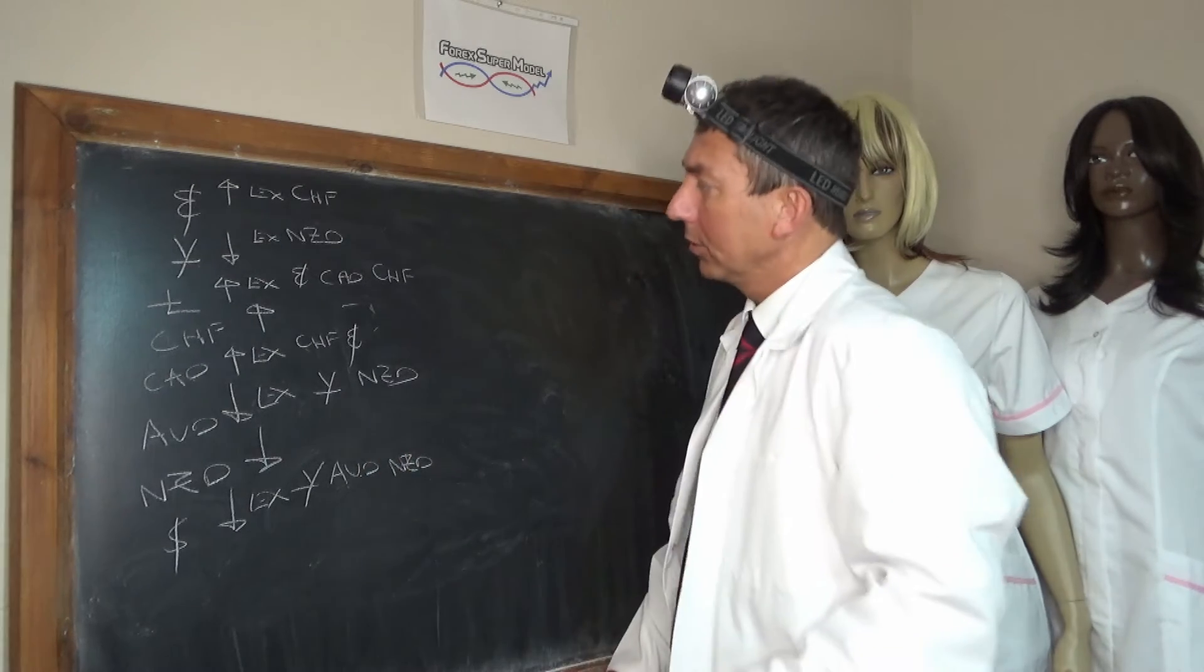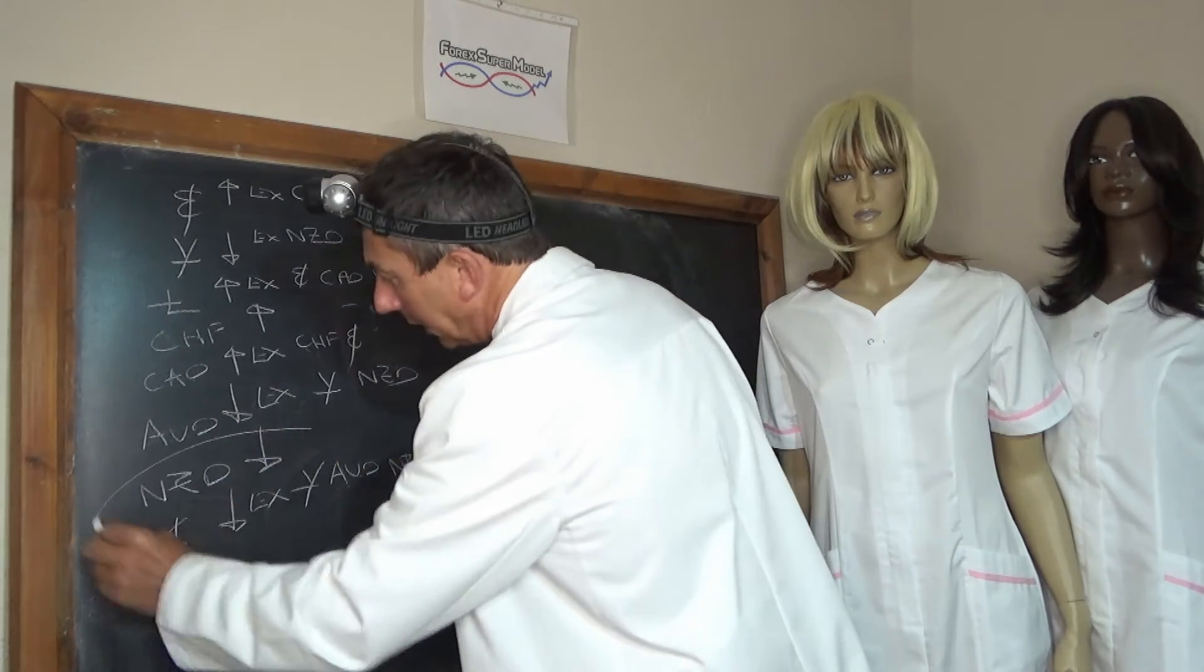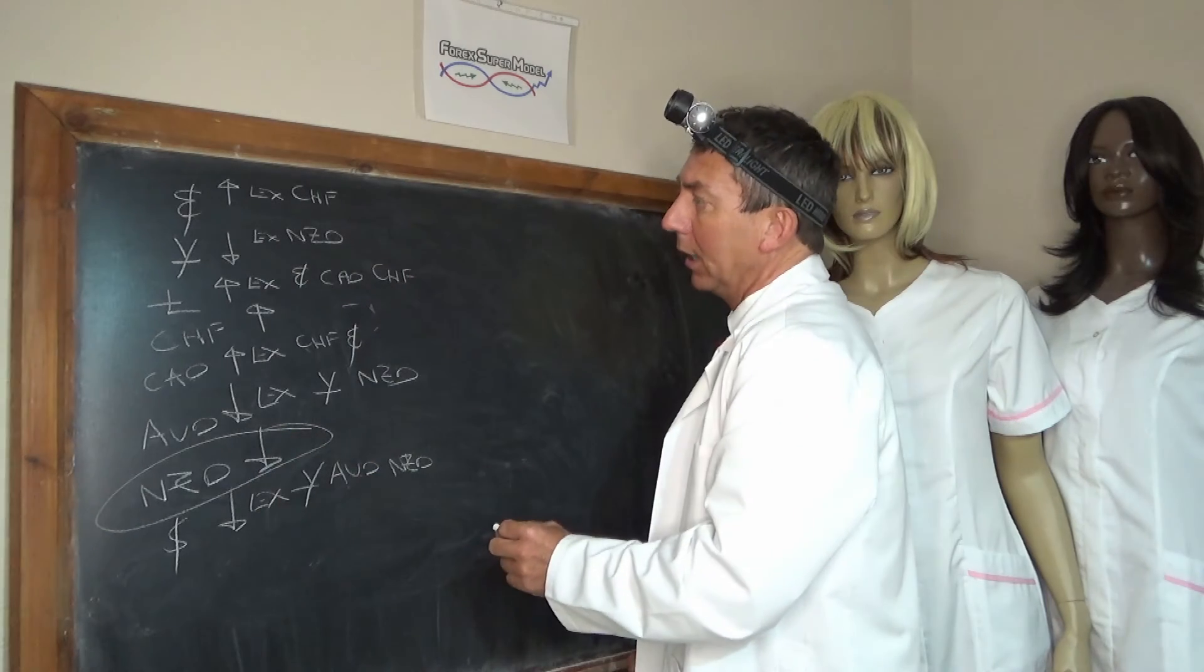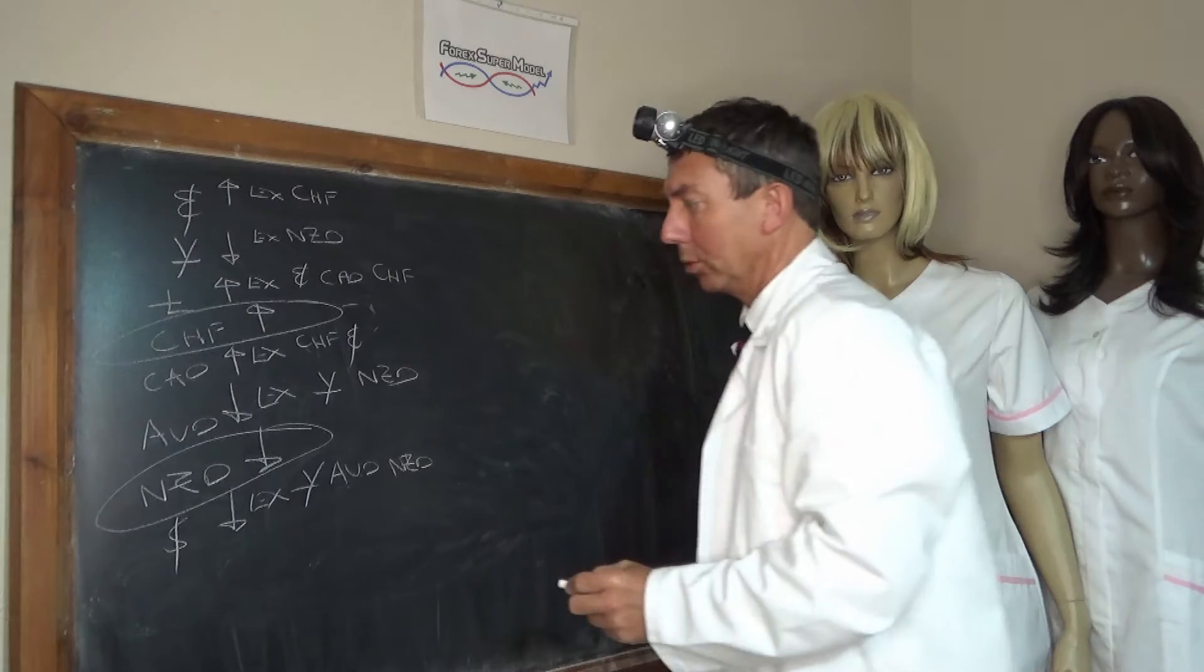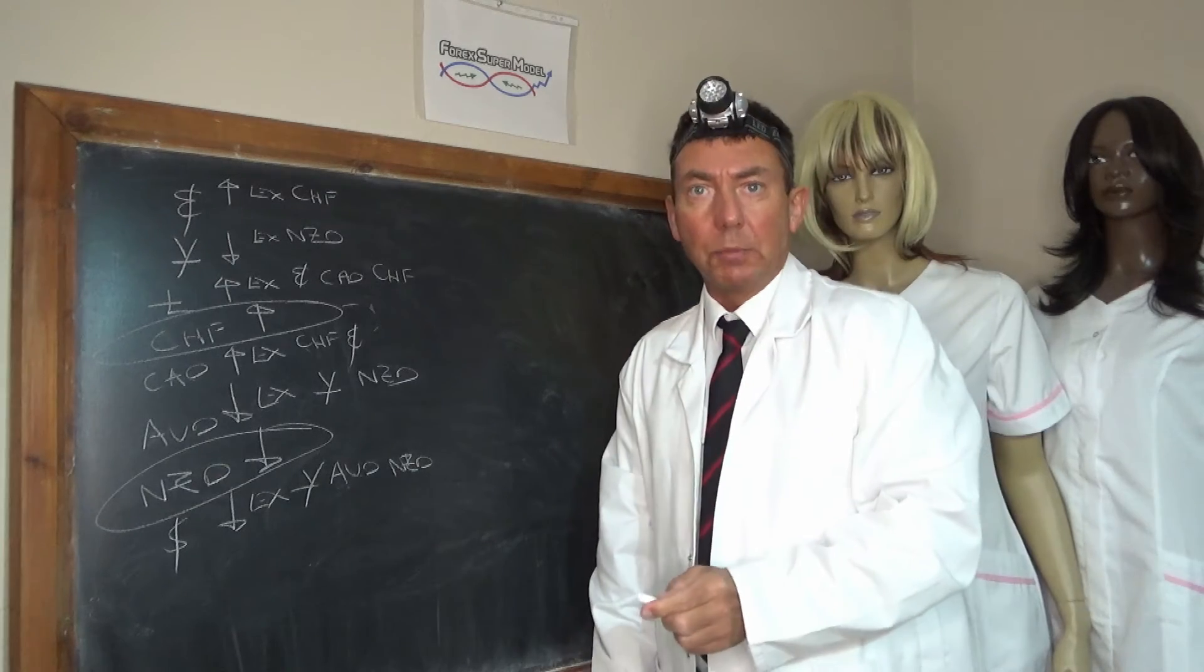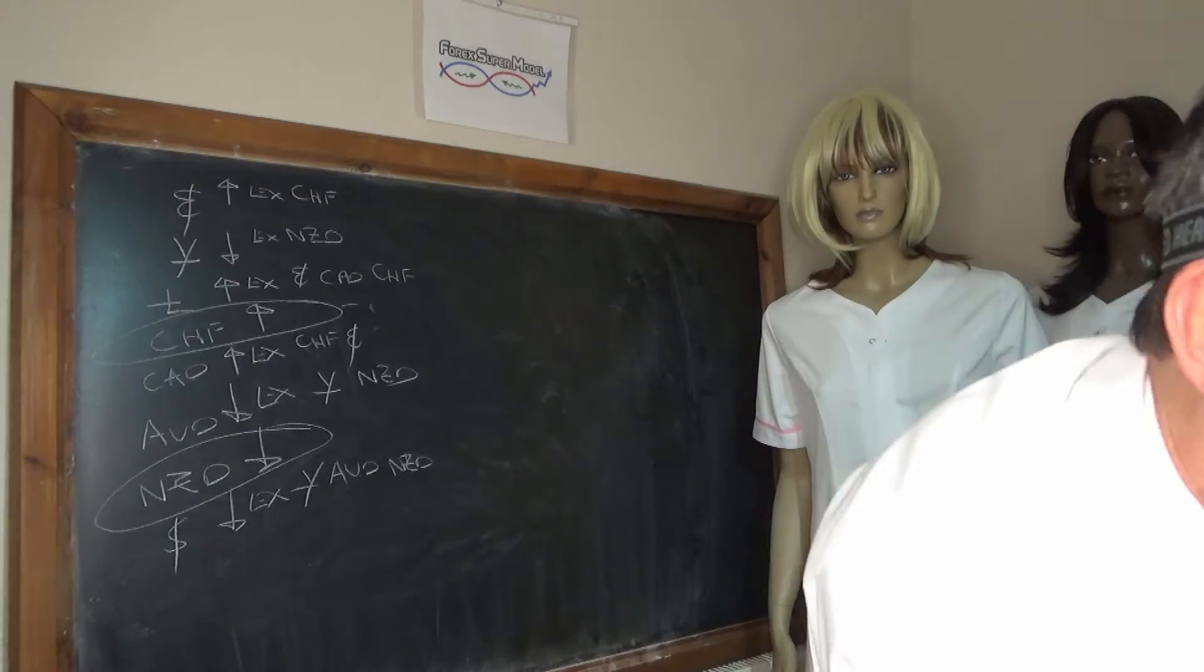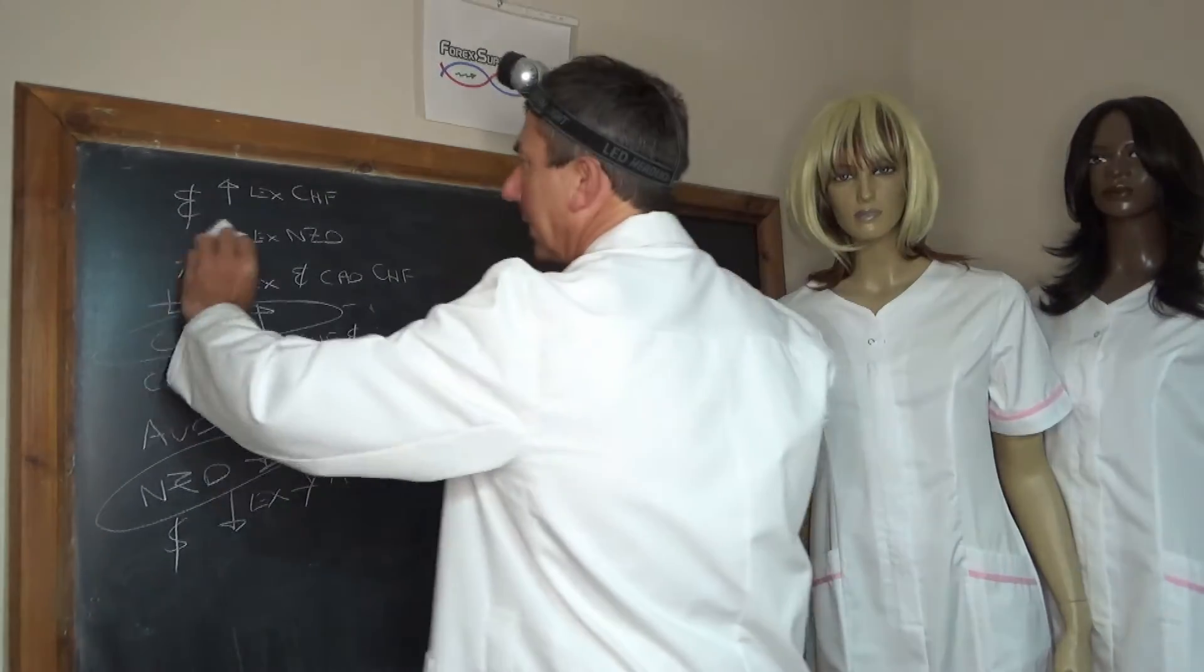So what have we got? We've got New Zealand weakness across the board. And we've got Swiss strength across the board. I'd take your pick in the middle. So let's have a look at the asset classes.